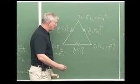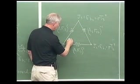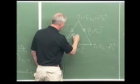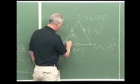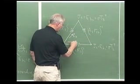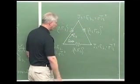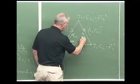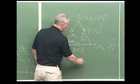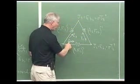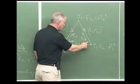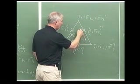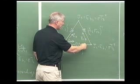Then we can write the heat flow. From one to two, we have Q1 to 2, and then Q2 to 3. Note that Q1 to 2 in equilibrium is equal to Q2 to 1, and also Q1 to 3 equals Q3 to 1, and Q2 to 3 equals Q3 to 2. So that would be our circuit diagram.